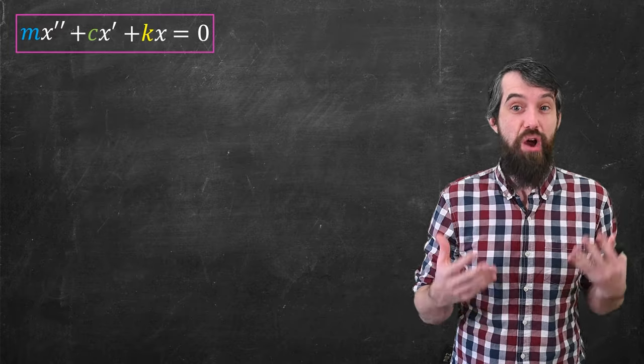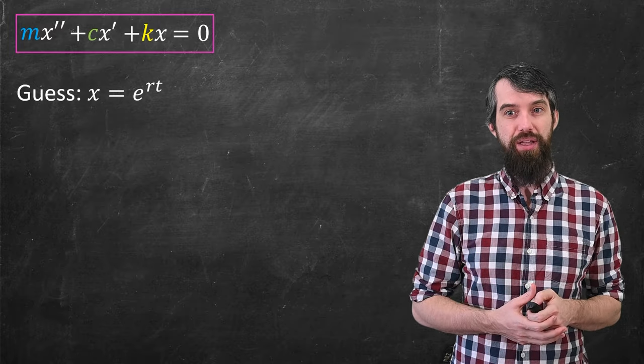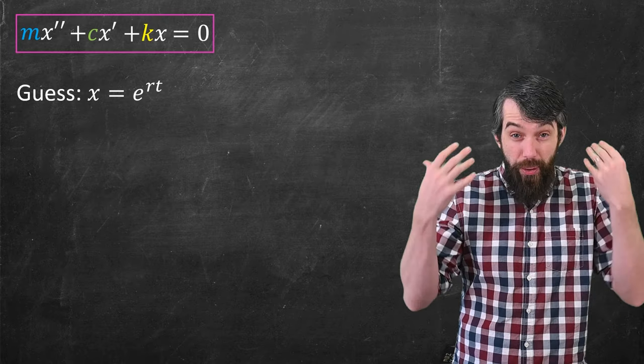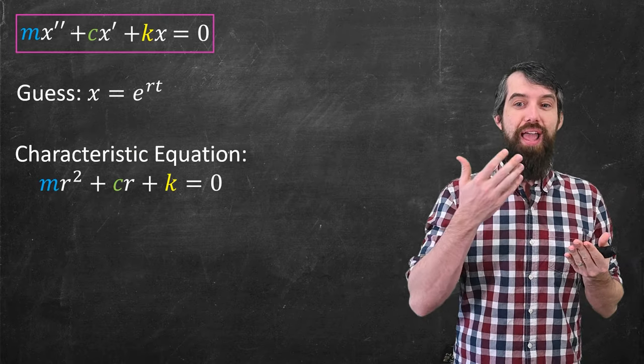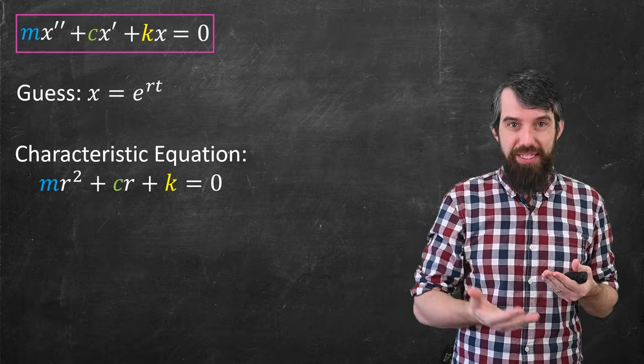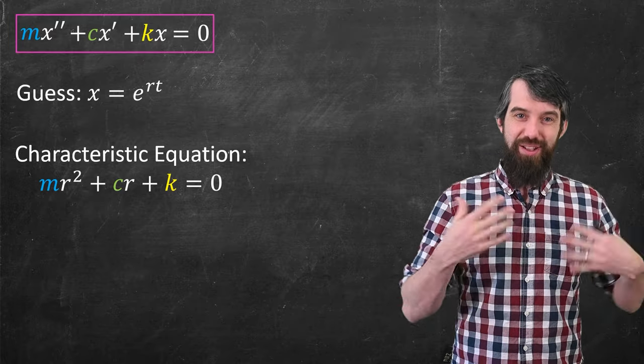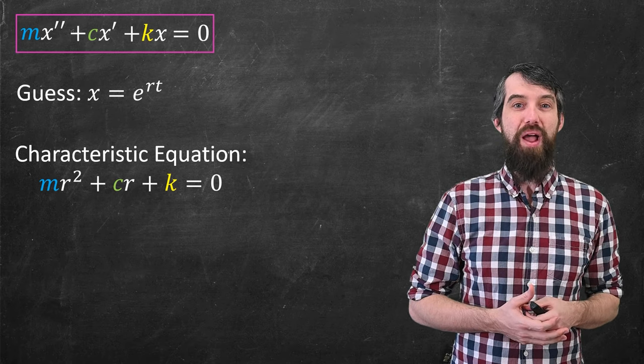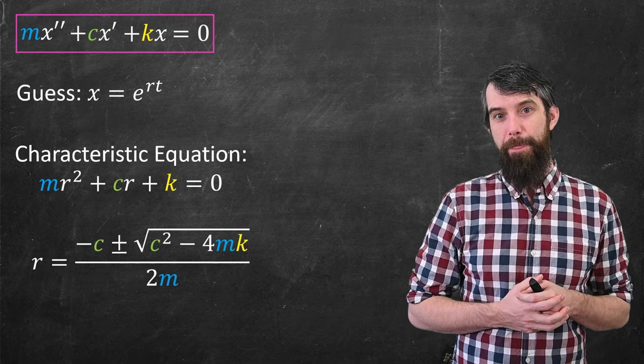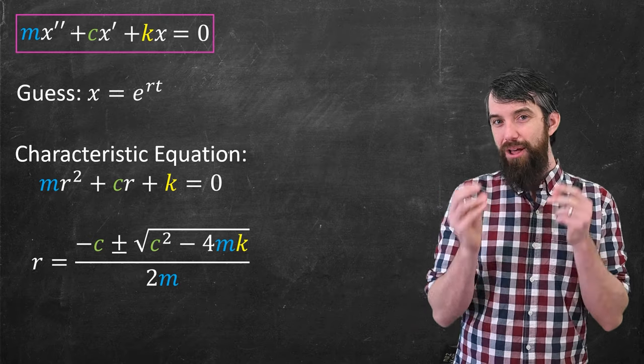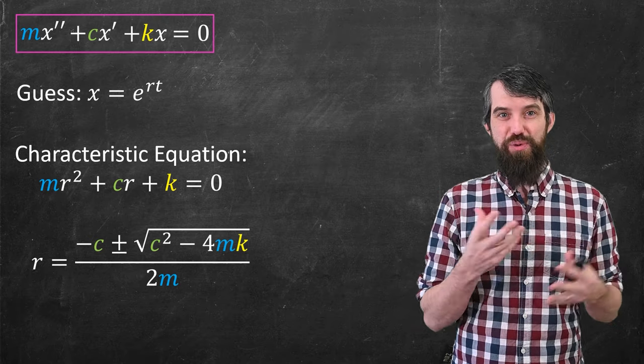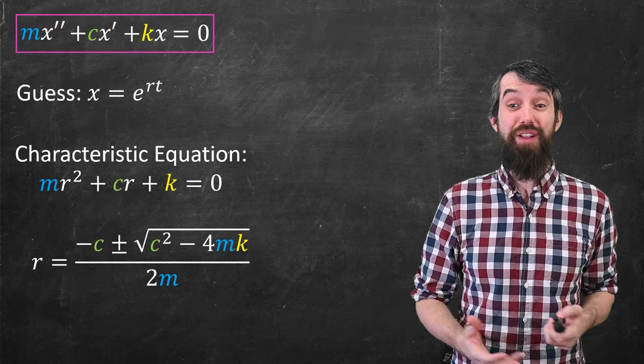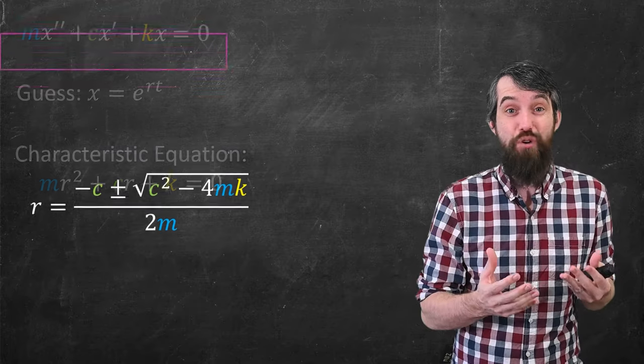Okay, so what I'm going to do is the same trick I always do. I'm going to guess x is equal to e to the rt. I plug this in, I get a characteristic equation of mr squared plus cr plus k is equal to zero, as well as an e to the rt on every term, which I would cancel. And then if I want to solve for my r, well, it's just the quadratic formula here. So now there's a quadratic formula, but I've got these arbitrary constants. And so there's actually a bunch of different cases of what this quadratic formula could do.